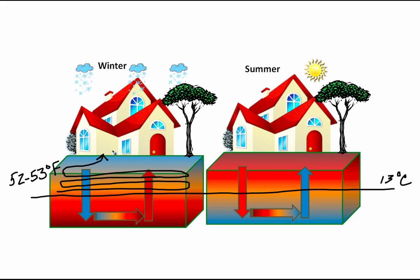The water brought into the house is 13 degrees Celsius — about 52 to 55 degrees Fahrenheit. We can get that water to release energy in a heating system, drawing heat out of the water and using that 55-degree ambient ground temperature to help add heat to buildings.